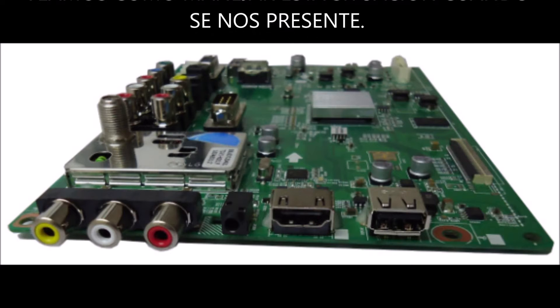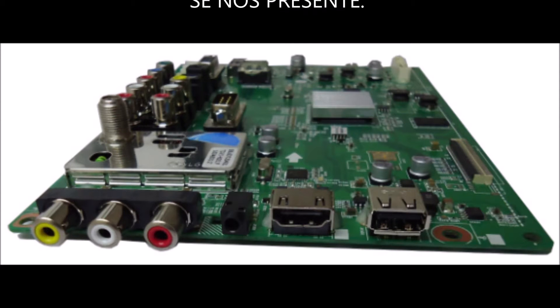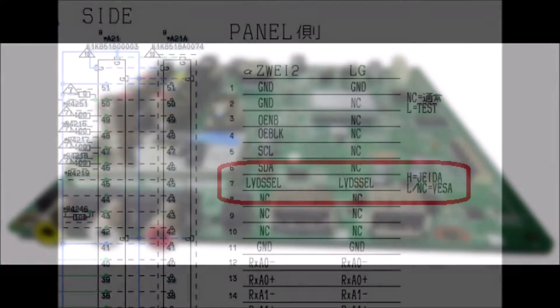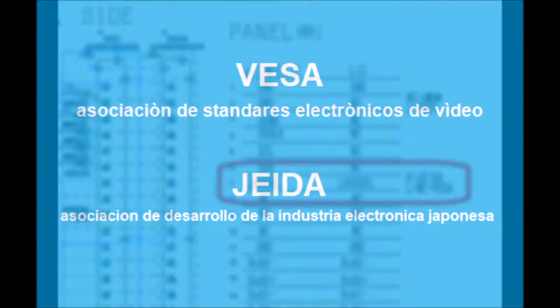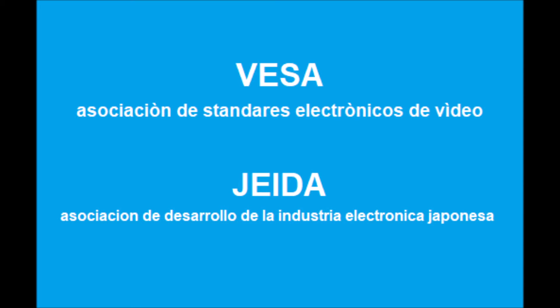Within the several signals that the main card sends to the TECON, there is one called LBDS Select or LBDS Data Format. This signal, which can be called BESAI, which means Association of Electronics Video Standards,